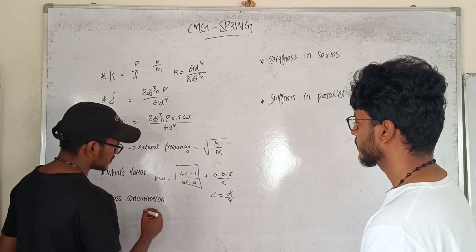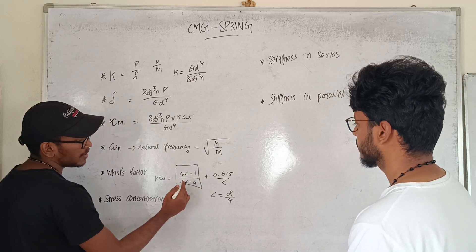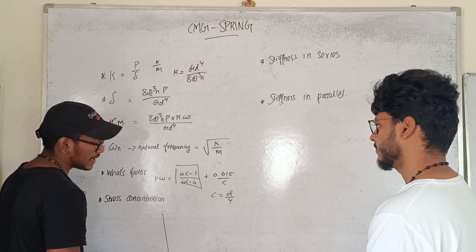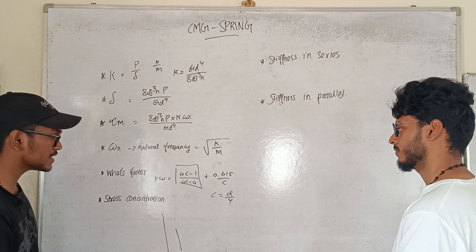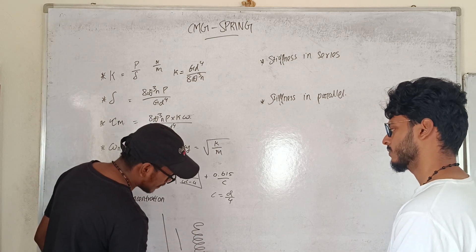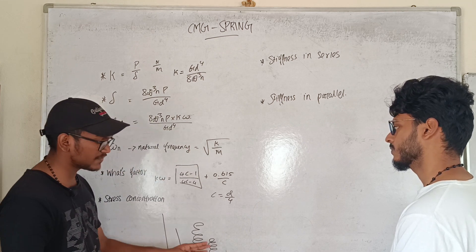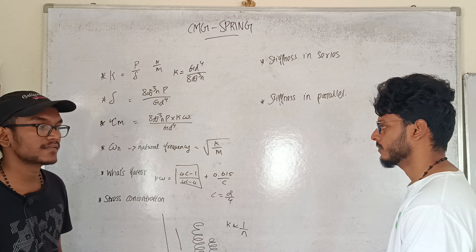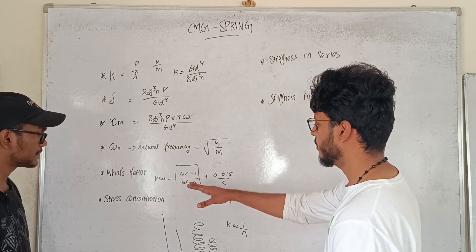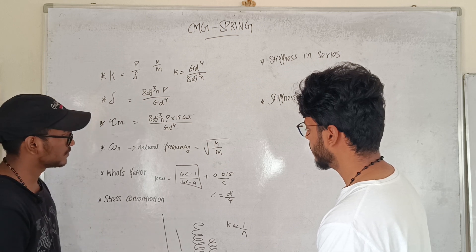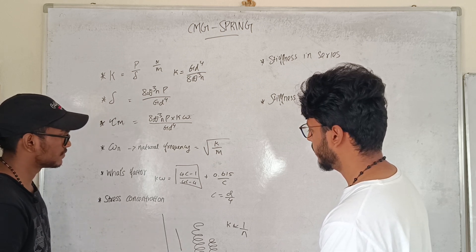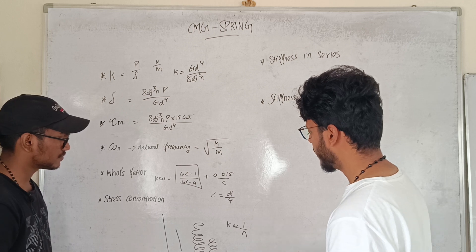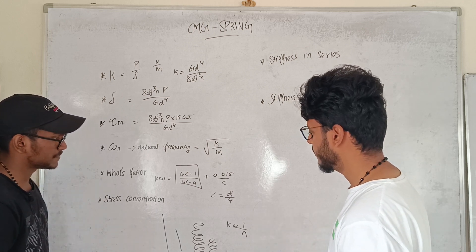If you want to see the same coils, KW equals (4C minus 1) divided by (4C minus 4) plus 0.615 divided by C. The stiffness is inversely proportional to the number of coils. If the number of coils increases, the stiffness becomes single-sided — it decreases.